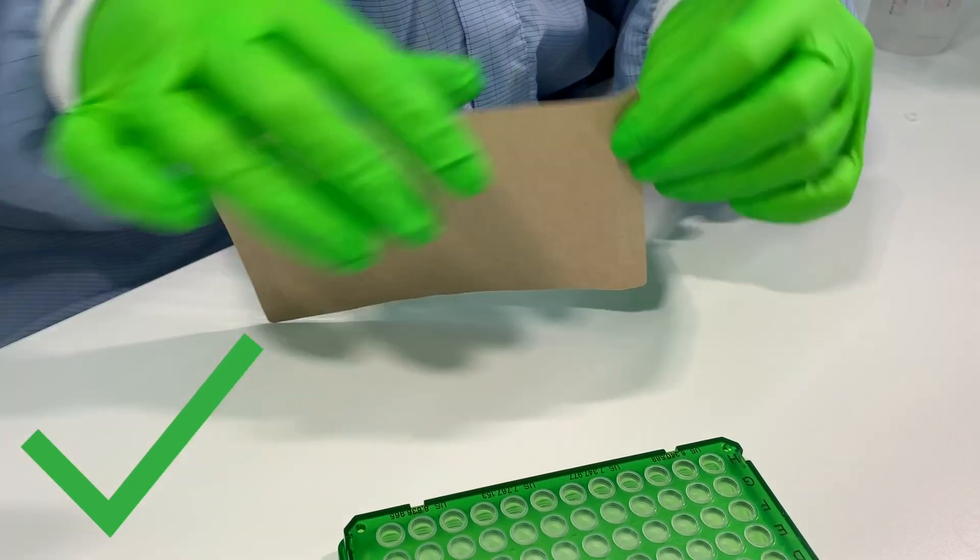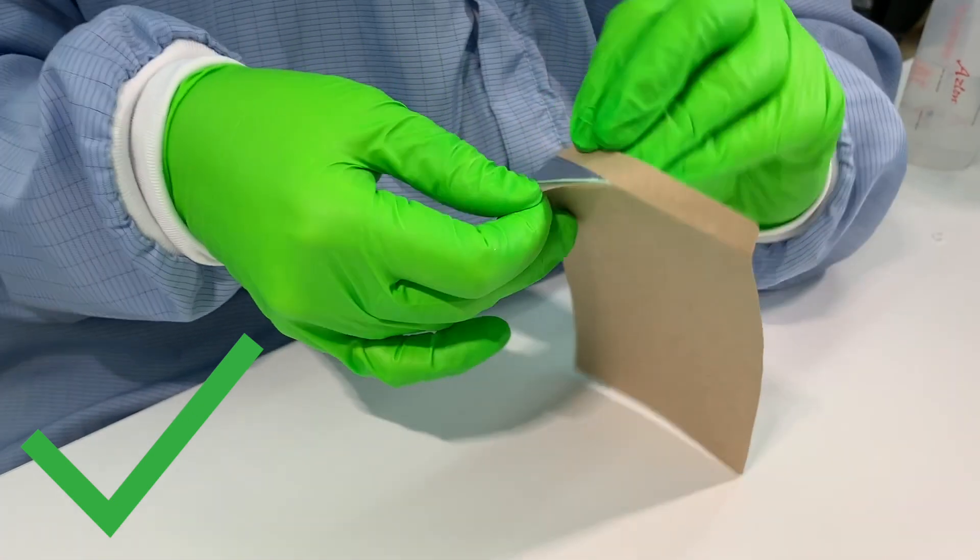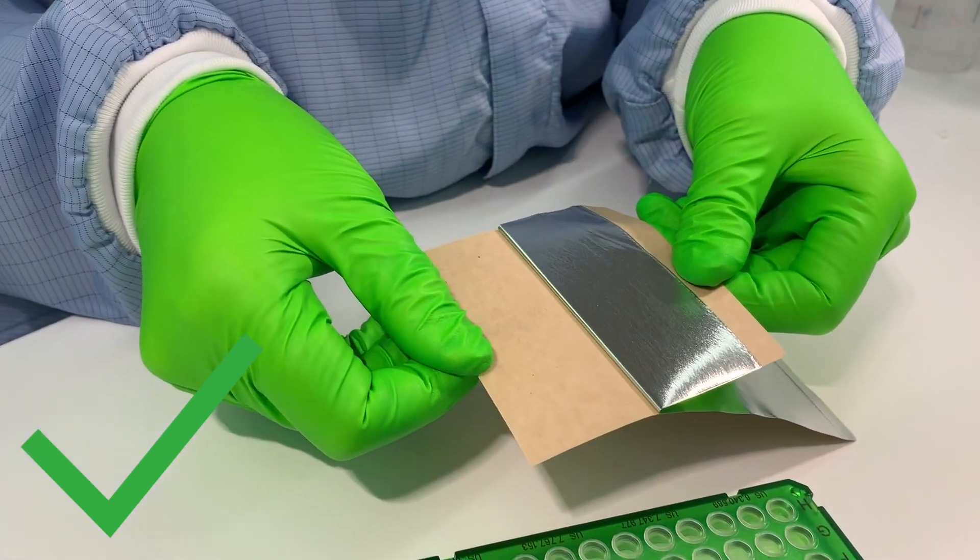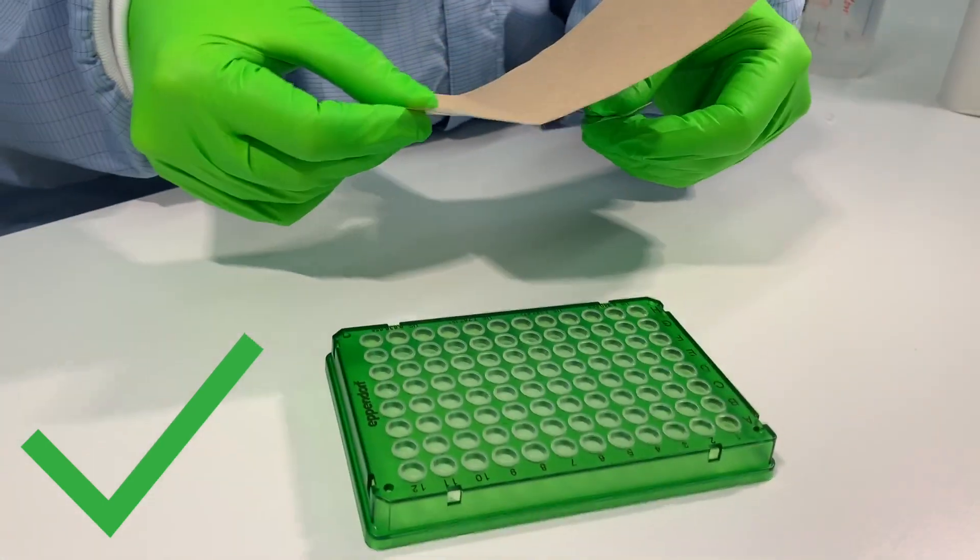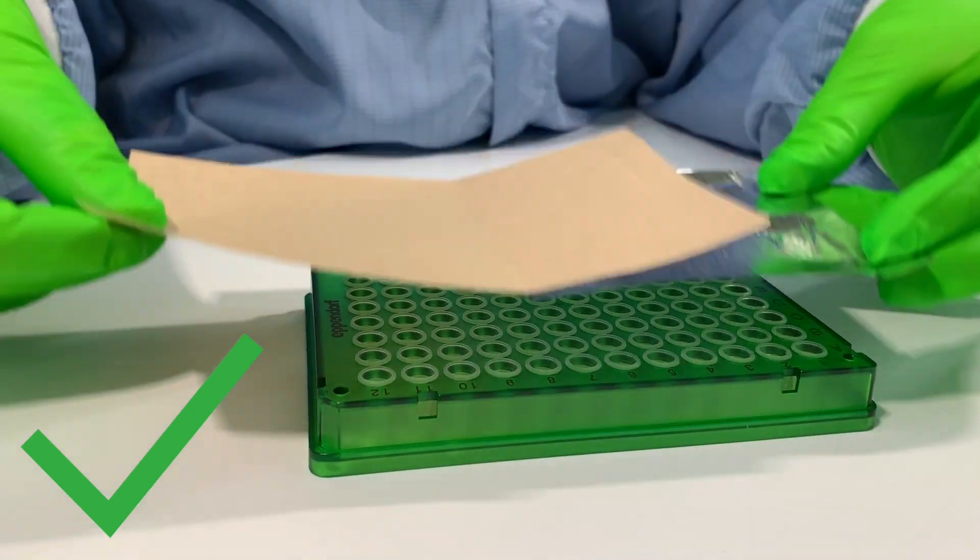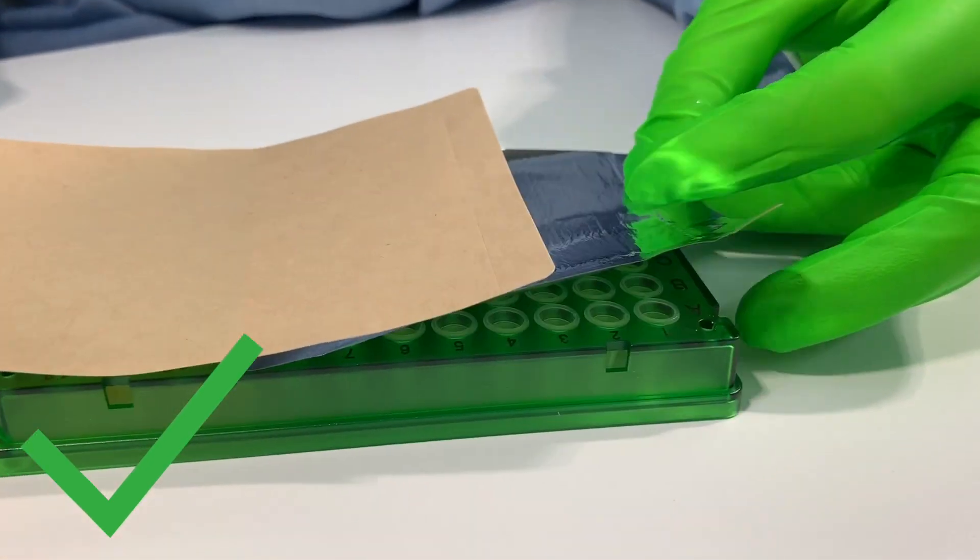Not every lab has a plate sealer. However, there is an easy way to seal a plate using the protective paper. As before, pull away the protective paper about two thirds without touching the sticky side. Place the seal with the perforation located along the edge of the plate, press down on the seal and pull the protective paper over the other edge of the plate.